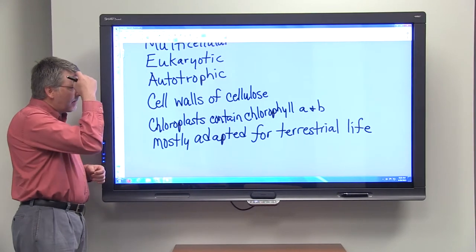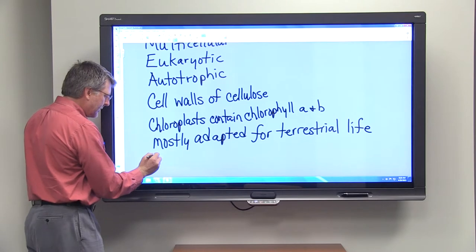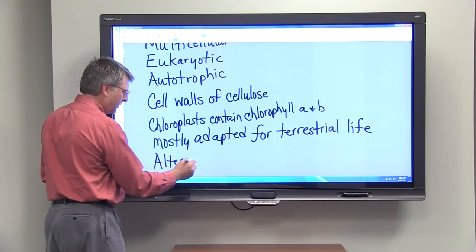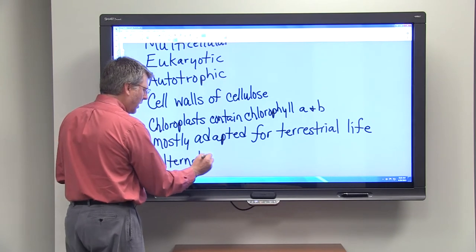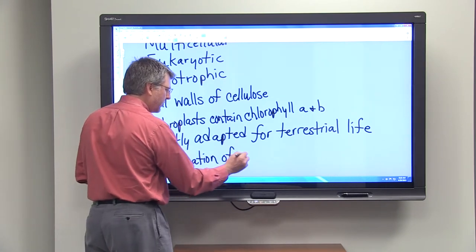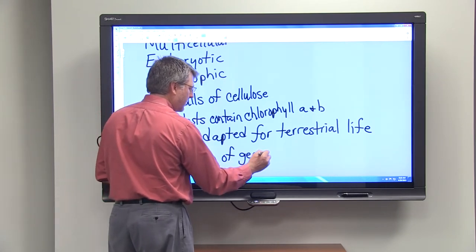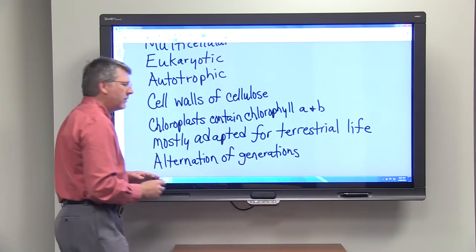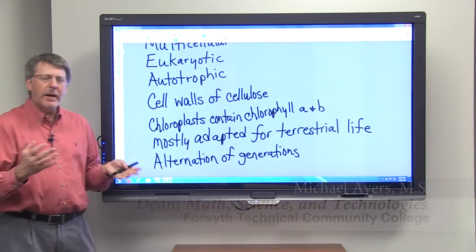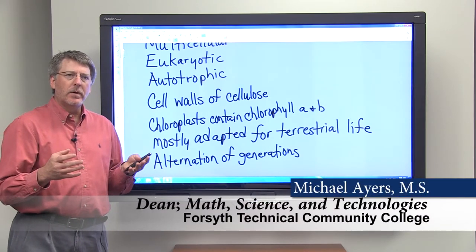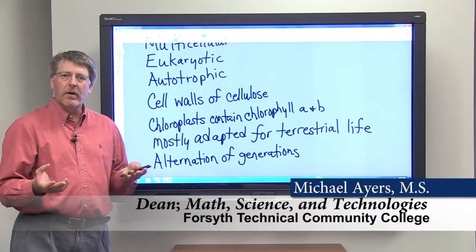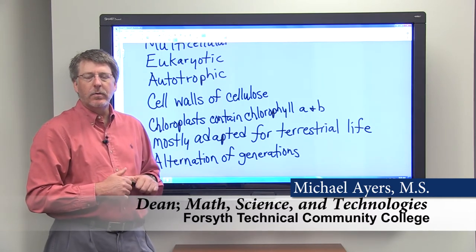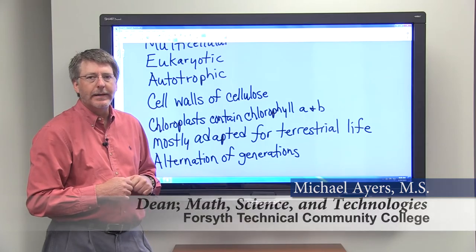The final thing about plants is that plants exhibit what we call alternation of generations. This means that plants alternate between what we call a sporophyte generation and a gametophyte generation, and that's one of the things that we want to talk about next.